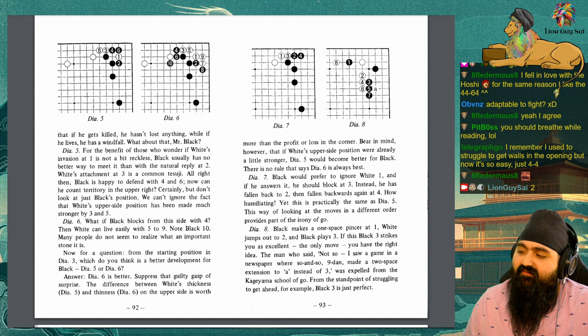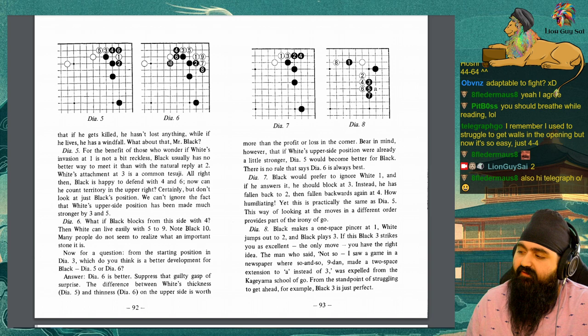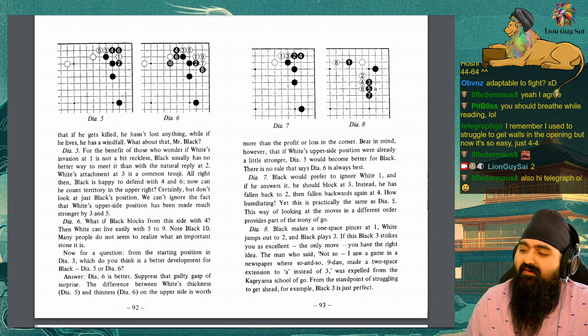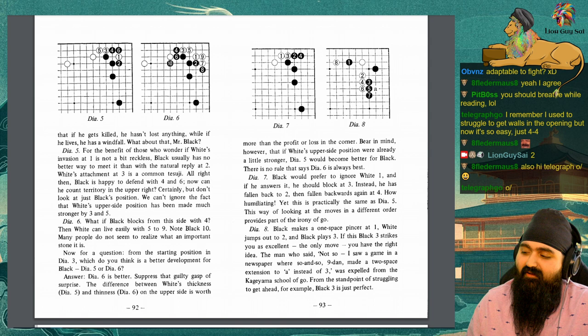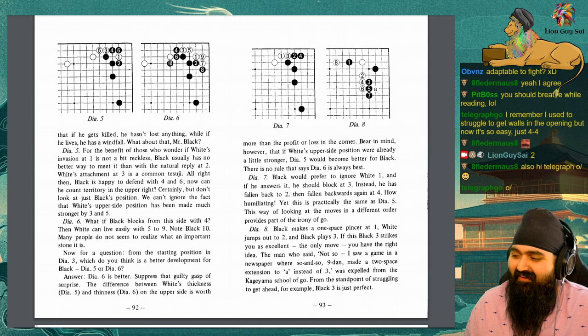Diagram 8. Black makes a 1 space pincer at 1, white jumps out to 2, and black plays 3. If this black 3 strikes you as excellent, the only move, you have the right idea. The man who said, not so, I saw a game in a newspaper where so and so 9 Dan made a 2 space extension to A instead of 3, was expelled from the Kageyama school of go.